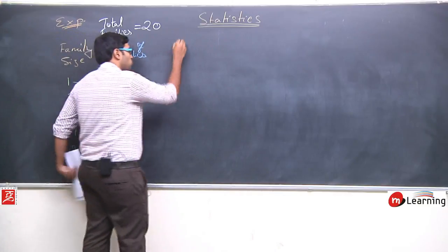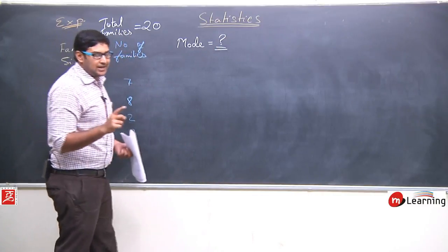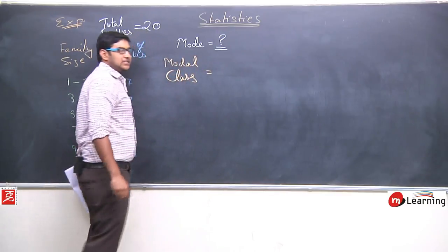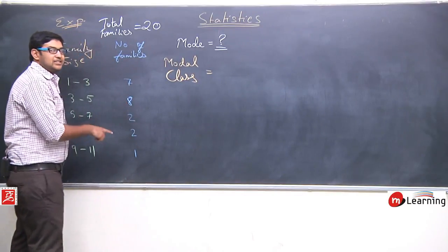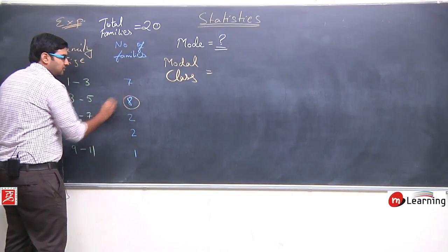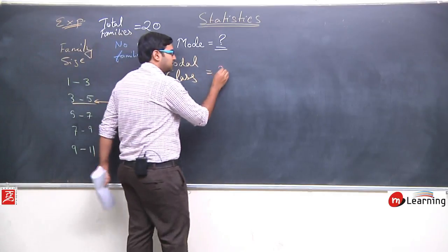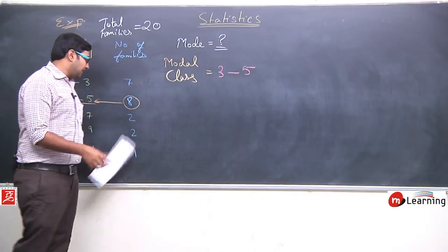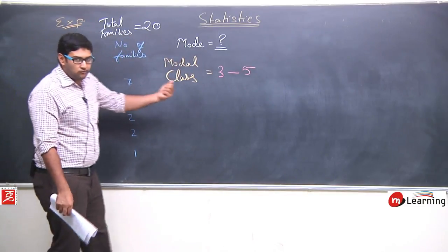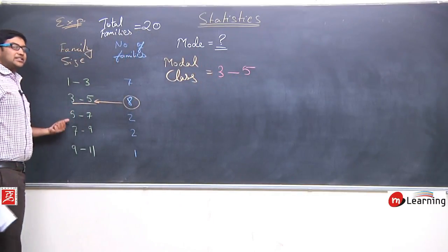First we search for the modal class — the class with the highest frequency. You can see the frequency 8 is the highest, and it corresponds to the class 3 to 5. So my modal class is 3 to 5. This means the most common family type seen in the survey had members in the range 3 to 5 — either 3 or 4 members, since 5 is the upper class boundary.